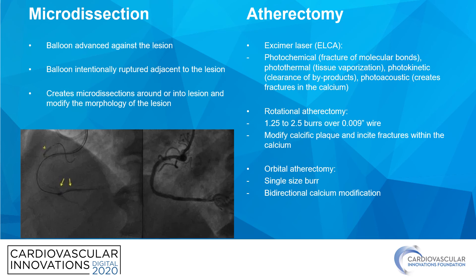There are various kinds of atherectomies — the excimer laser, rotational atherectomy, or orbital atherectomy. You can use these if your atherectomy wire is across the lesion and you're able to perform atherectomy.